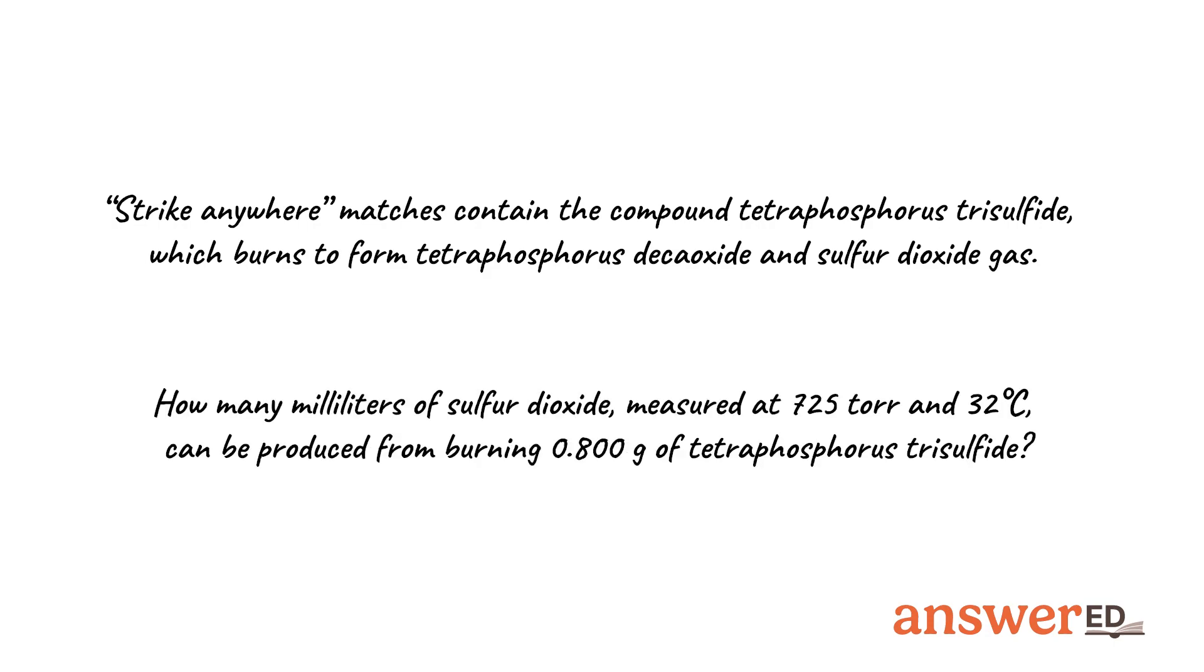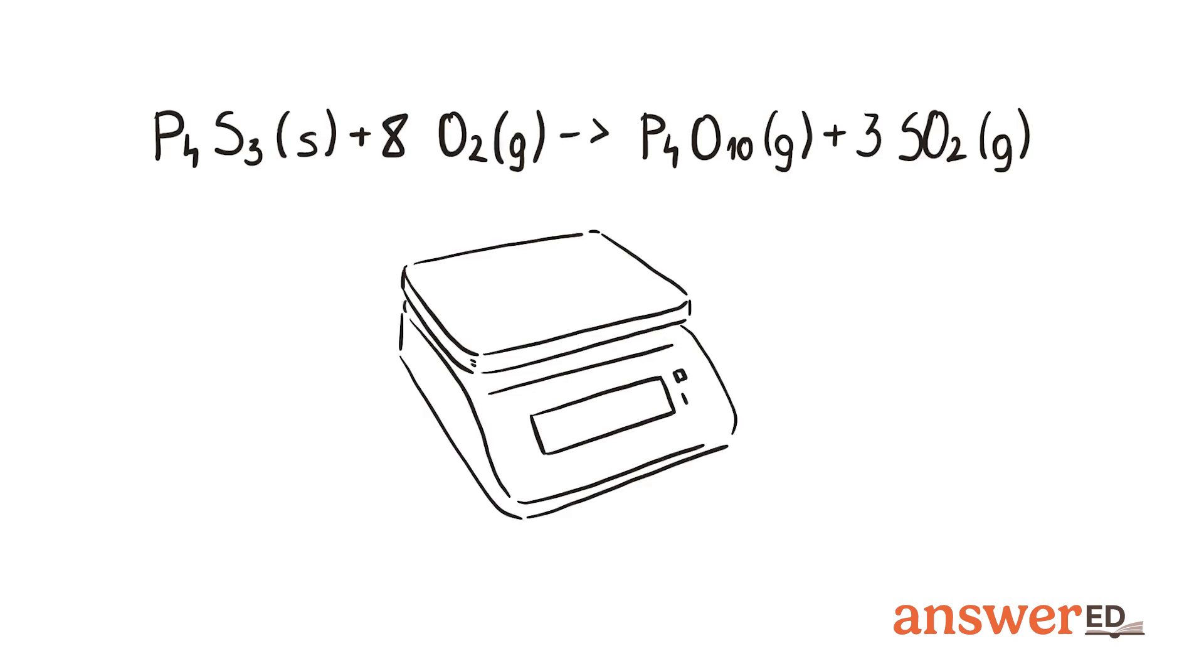How many milliliters of sulfur dioxide, measured at 725 torr and 32°C, can be produced from burning 0.800 grams of tetraphosphorus trisulfide? Given a reaction where tetraphosphorus trisulfide burns to form sulfur dioxide gas.